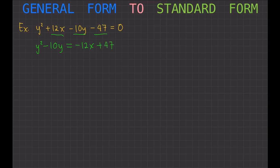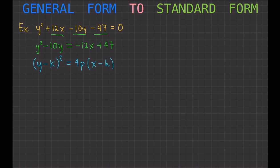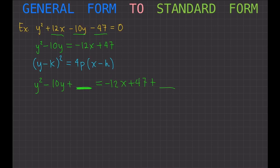The next step is to find a perfect square trinomial. We want the left-hand side to become y minus k squared, and the right-hand side to become 4p times x minus h — that's the standard form of a parabola. We need to add some value that will make the left side a perfect square trinomial, and then add that same number to the right side to maintain equality.